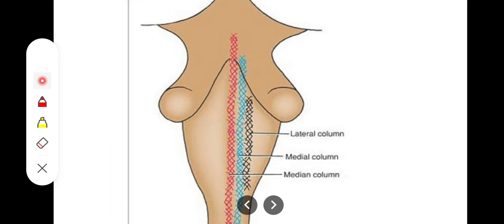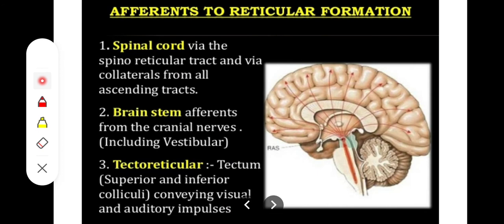There are three columns of the reticular formation in the brainstem: the median column, the medial column, and the lateral column. The median column contains intermediate size neurons, the medial column contains large size neurons, and the lateral column contains relatively small size neurons and nerve fibers.